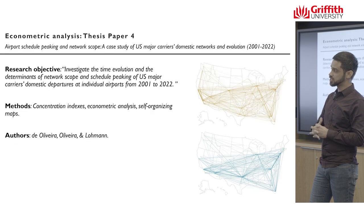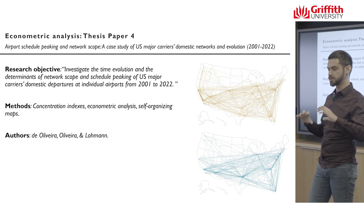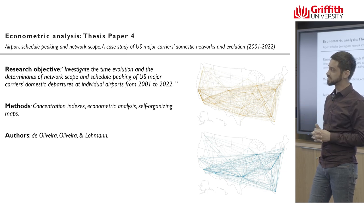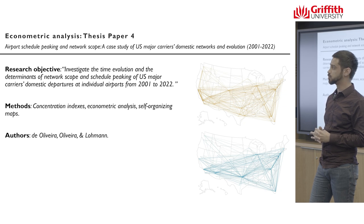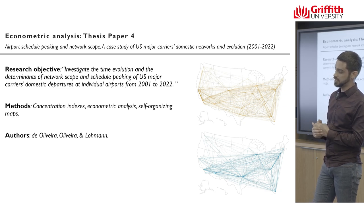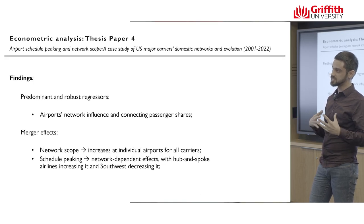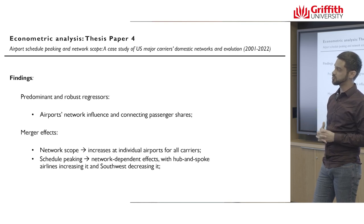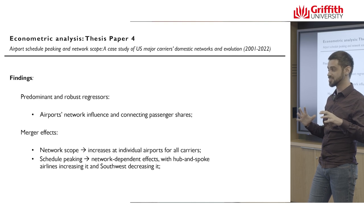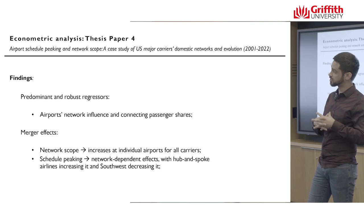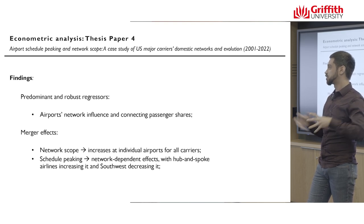In the next paper I looked into the factors influencing network scope — which is the effective number of destinations out of an airport — and schedule peaking, which is the concentration of flights throughout the day for US carriers. We used linear regressions and a type of neural network. The results suggest the central role of both an airport's network influence and the number of connecting passengers for both measures. We also found that after mergers, all airlines seemed to have expanded their network scope, while hub-and-spoke airlines concentrated their schedules and Southwest deconcentrated their schedules.